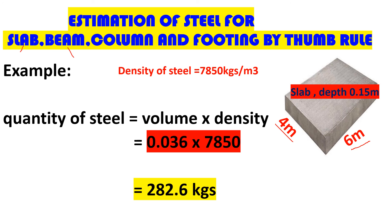That is how we estimate the quantity of steel using the thumb rule. Remember, the thumb rule gives approximate values, so there is a range — but it gives us a very quick solution to finding the quantity of steel when we need it fast. Thank you for your time and support. Subscribe, share, and don't forget to leave a comment. Until next time, bye bye.